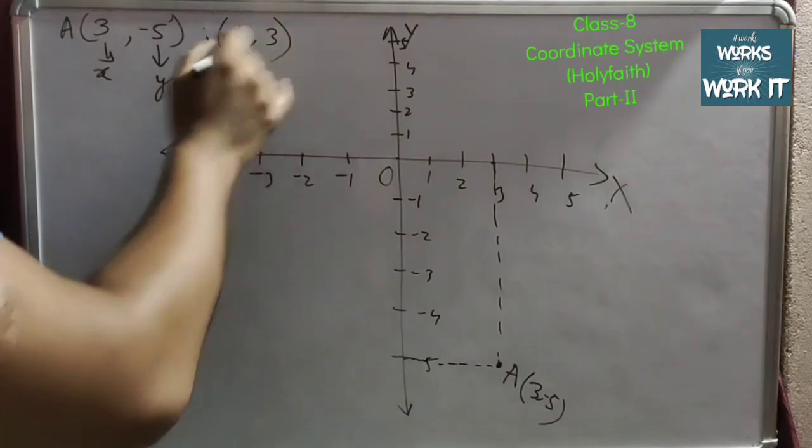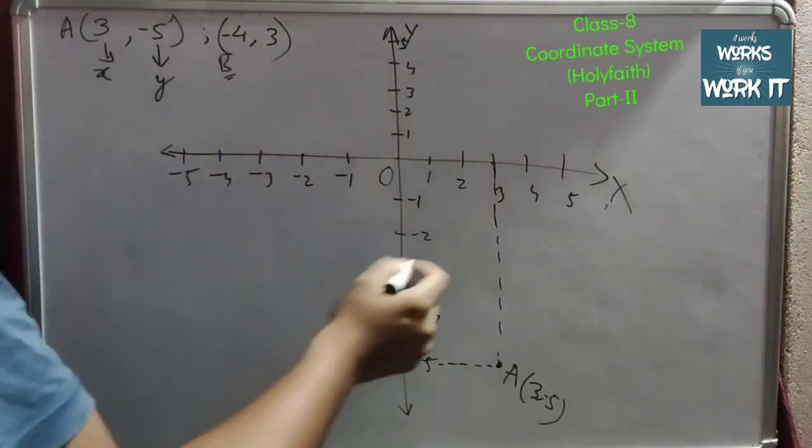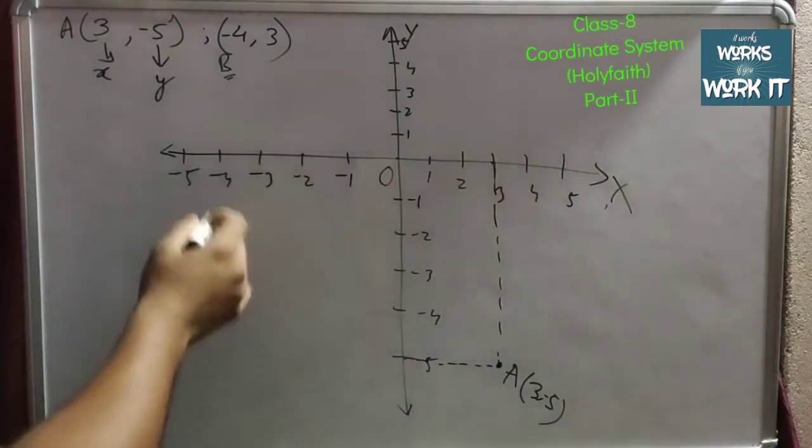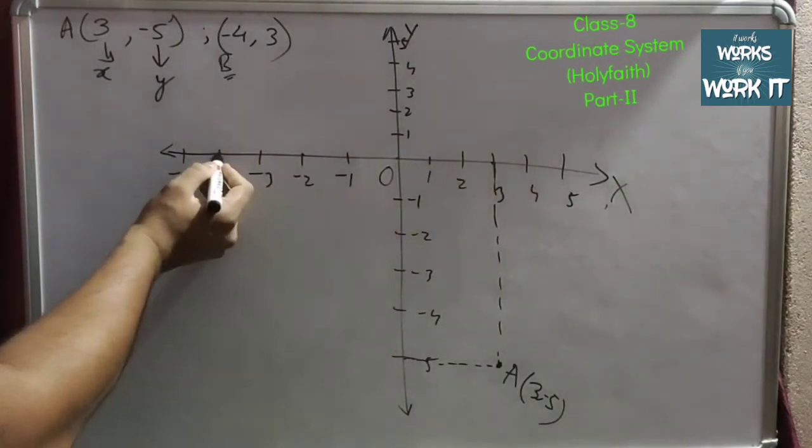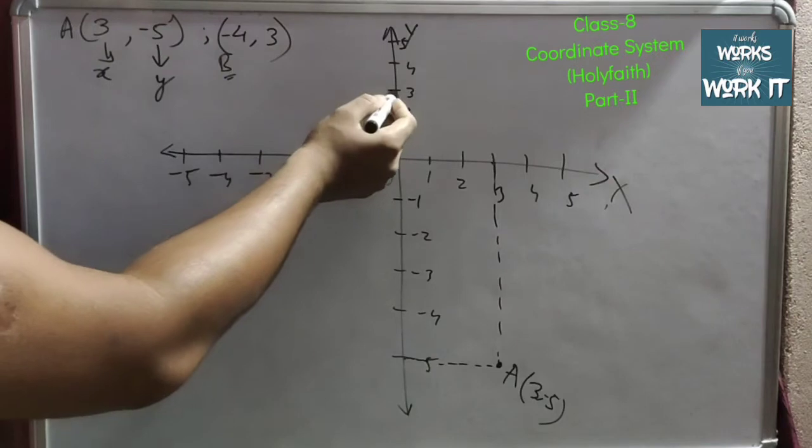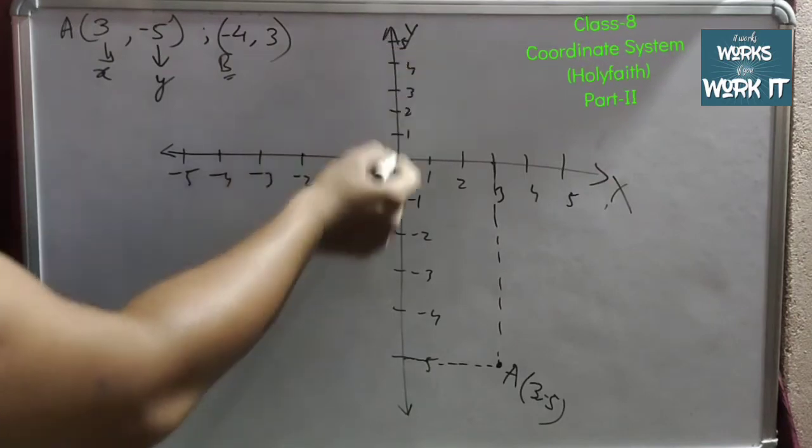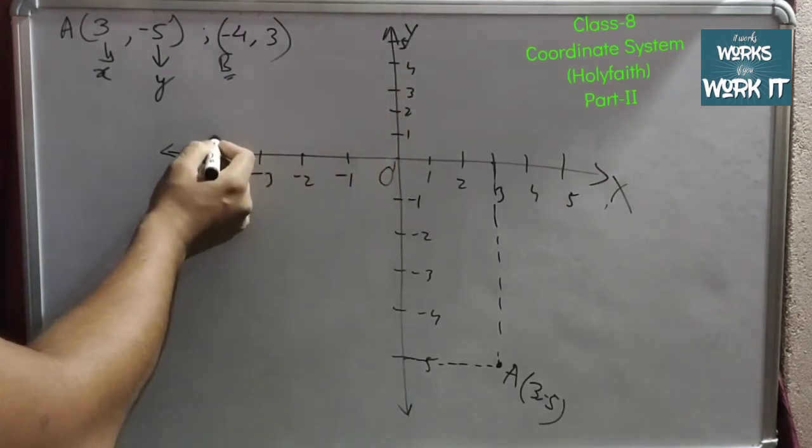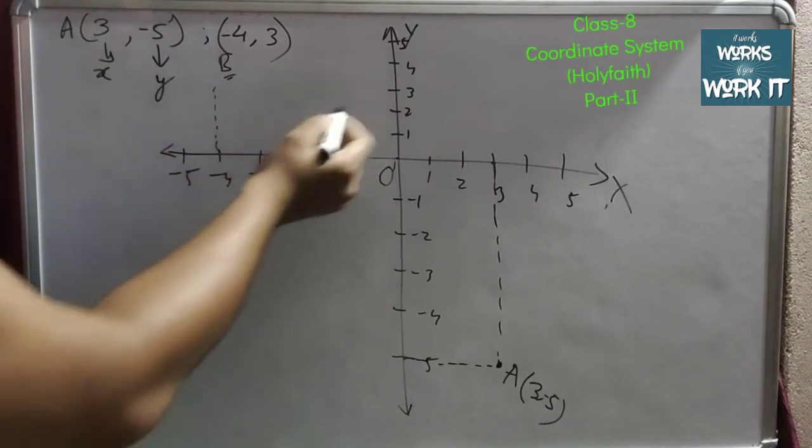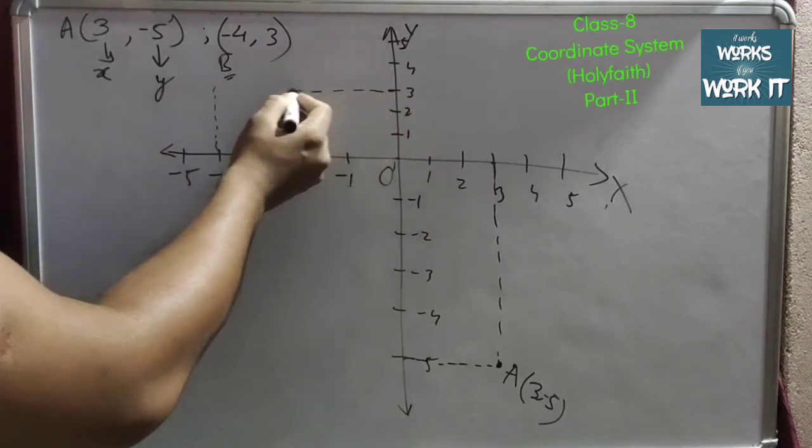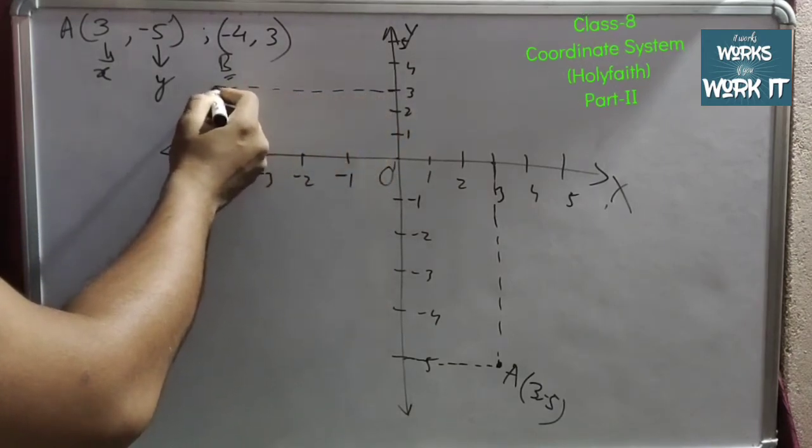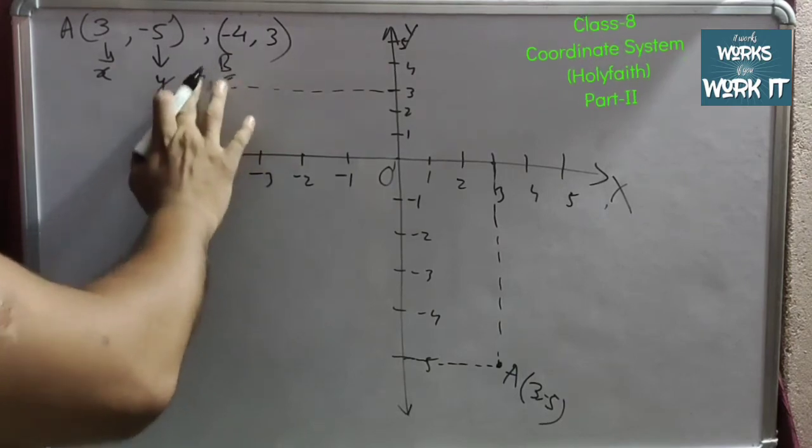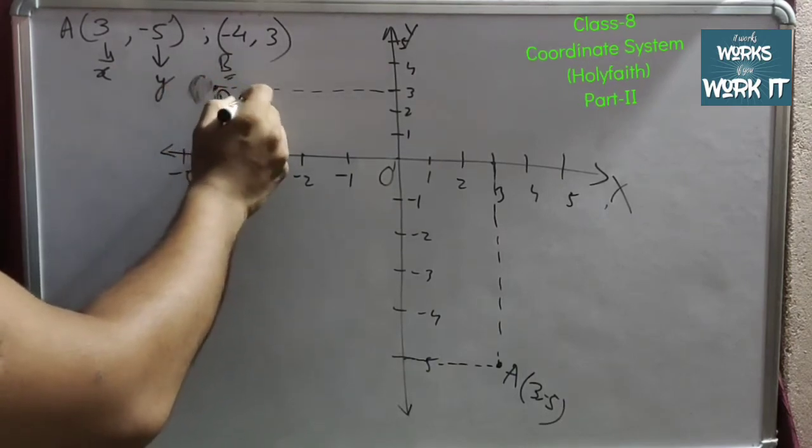Again if I take this one as point B, so (-4, 3). Again, -4 we have to see in the x-axis. Where is -4 in the x-axis? This is the -4 in the x-axis. And 3, this is the point of 3 in the y-axis. So if I take this one as perpendicular line and this one as perpendicular line from the y-axis, wherever they meet that will be our point B. This will be point B and it will be denoted by the coordinate (-4, 3).